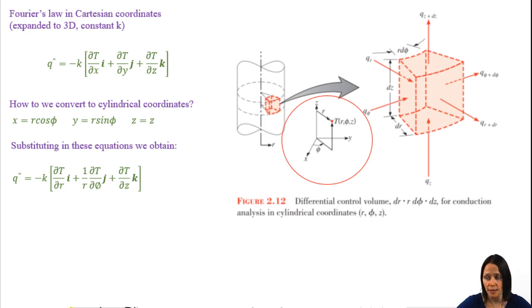Substituting into Fourier's law those Cartesian coordinates, and then doing a little derivation of those X, Y, and Z components that are now in terms of R, phi, and Z terms, we get Fourier's law in terms of cylindrical coordinates.